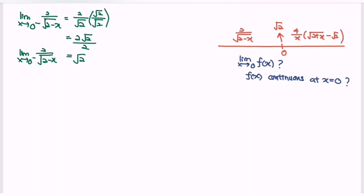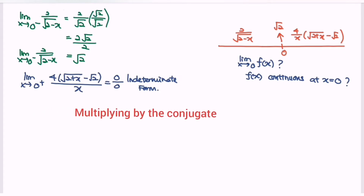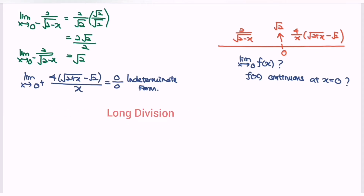Next, kindly focus on the limit when x approaches 0 from the right for the function 4 multiplied with square root of 2 plus x minus square root of 2, all over x. If we substitute 0, we obtain 0 over 0, which is the indeterminate form. There are three types of strategies we can use to solve this: number 1, multiply by the conjugate; number 2, factorize; number 3, long division. My suggestion would be to multiply by the conjugate.